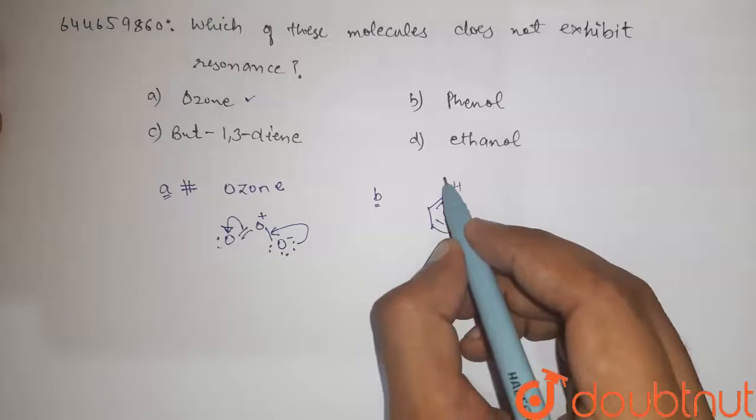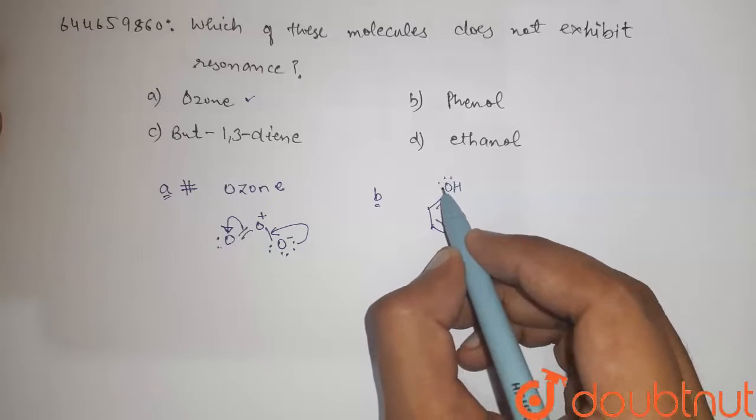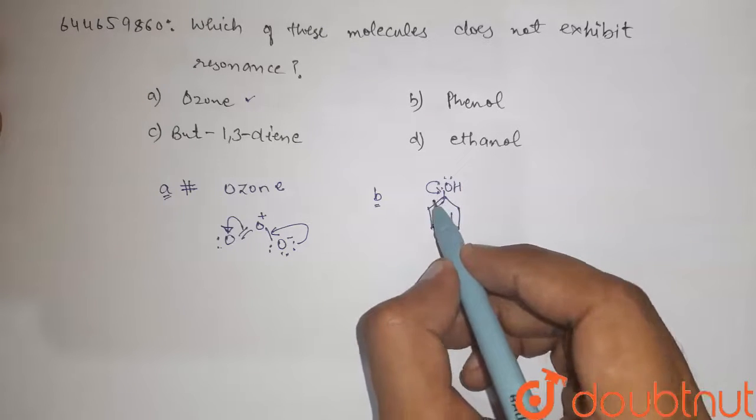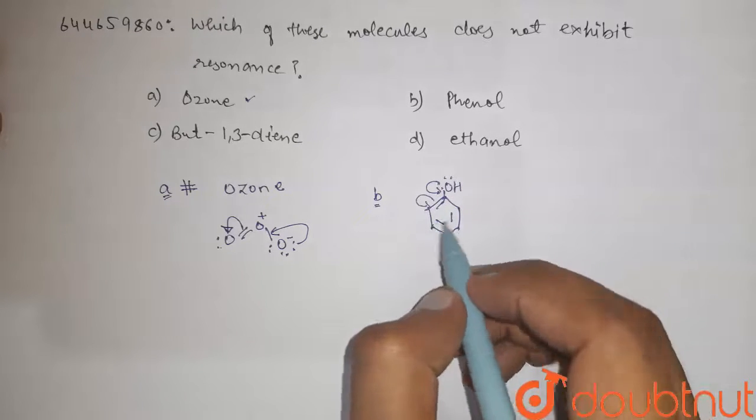Phenol. Here are two lone pairs. So this will attack here and this will attack here, so the conjugation continuously takes place.